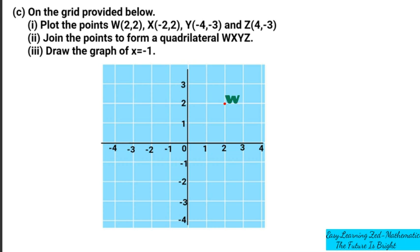Then we go to X, which has got negative 2, 2, which is supposed to be here, and we name it X. We go to Y, which has negative 4, negative 3, which is here, and we name it Y.